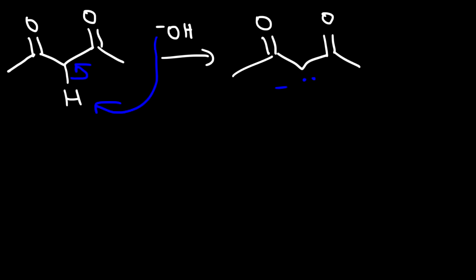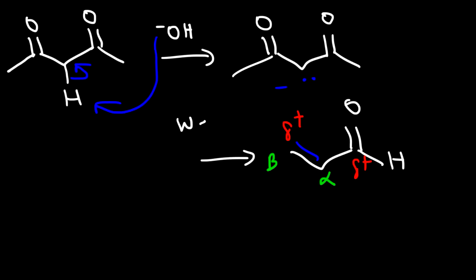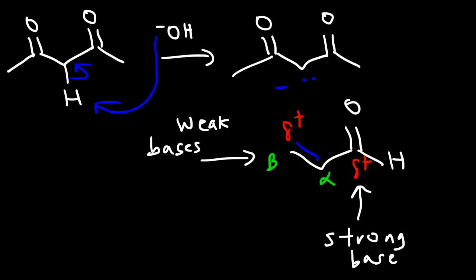This enolate is going to react with an alpha-beta unsaturated aldehyde. Here is the alpha carbon and here is the beta carbon. The beta carbon and the carbonyl carbon are both electrophilic, so a nucleophile can attack at either. Weak bases tend to attack at the beta carbon, while strong bases tend to attack at the carbonyl carbon, giving direct addition.